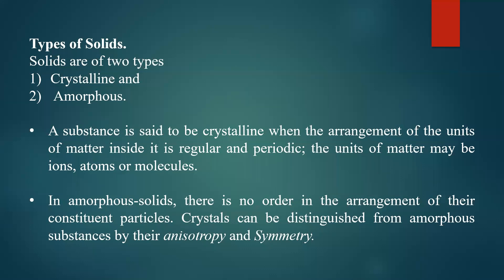To understand crystalline and amorphous solids, consider a visualized example. Take a room with 100 chairs, where chairs are the structural units forming the structure. If chairs are arranged in 10 rows and 10 columns with equal distance between them — one chair to another at equal spacing — then along the x and y directions the chairs are distributed in a regular and periodic pattern.